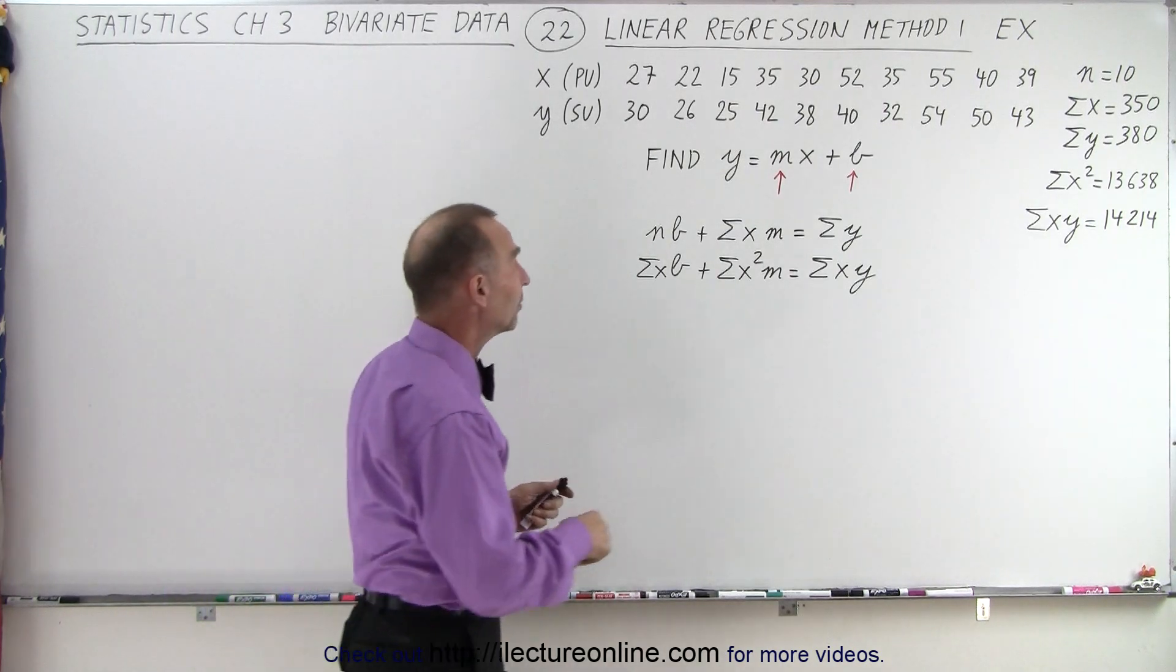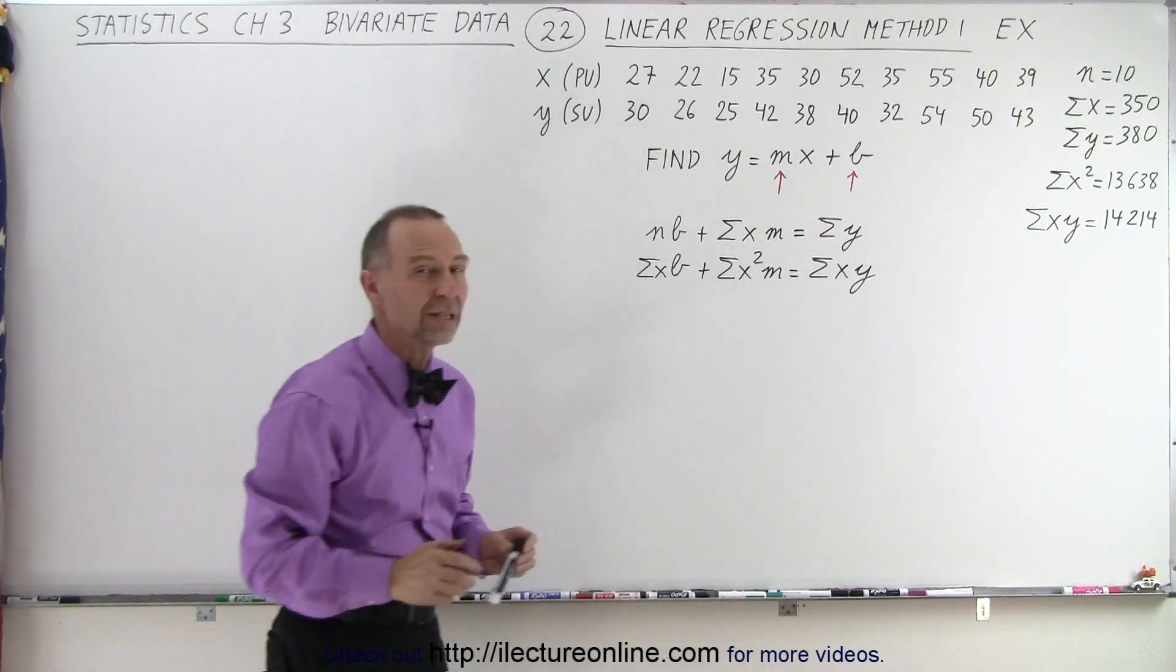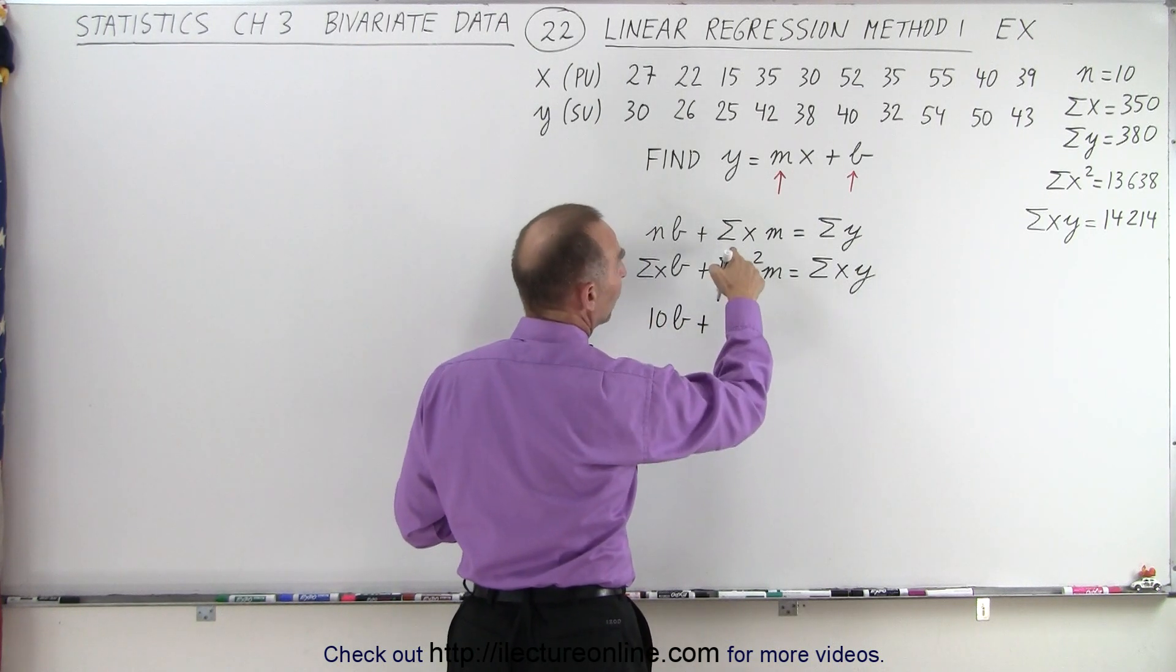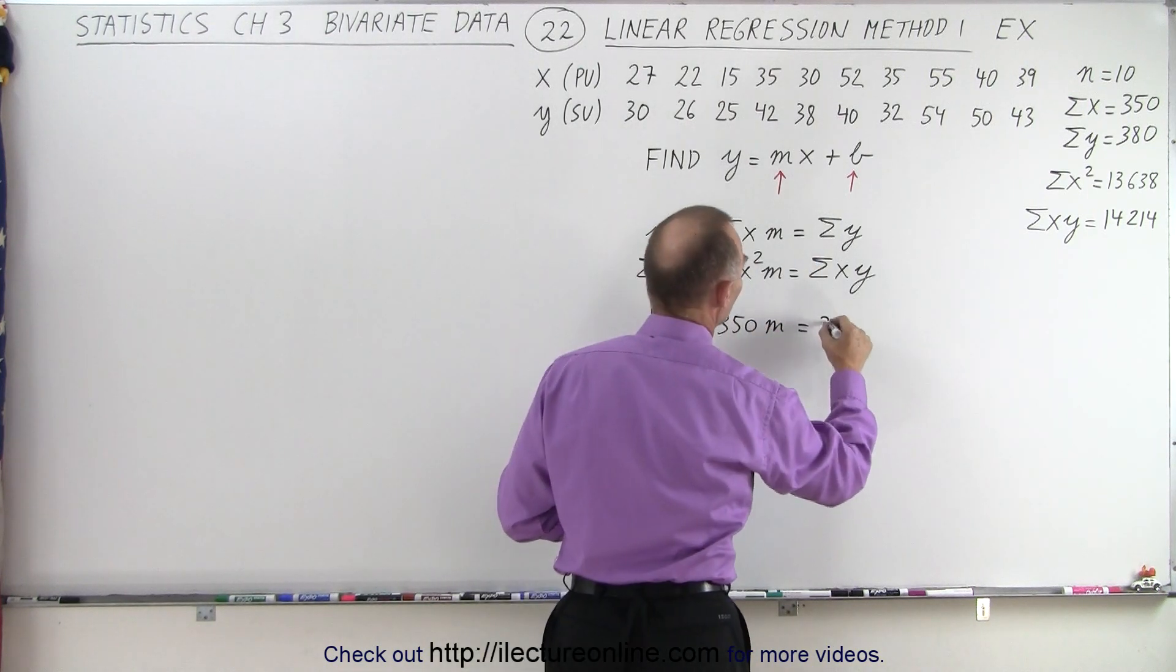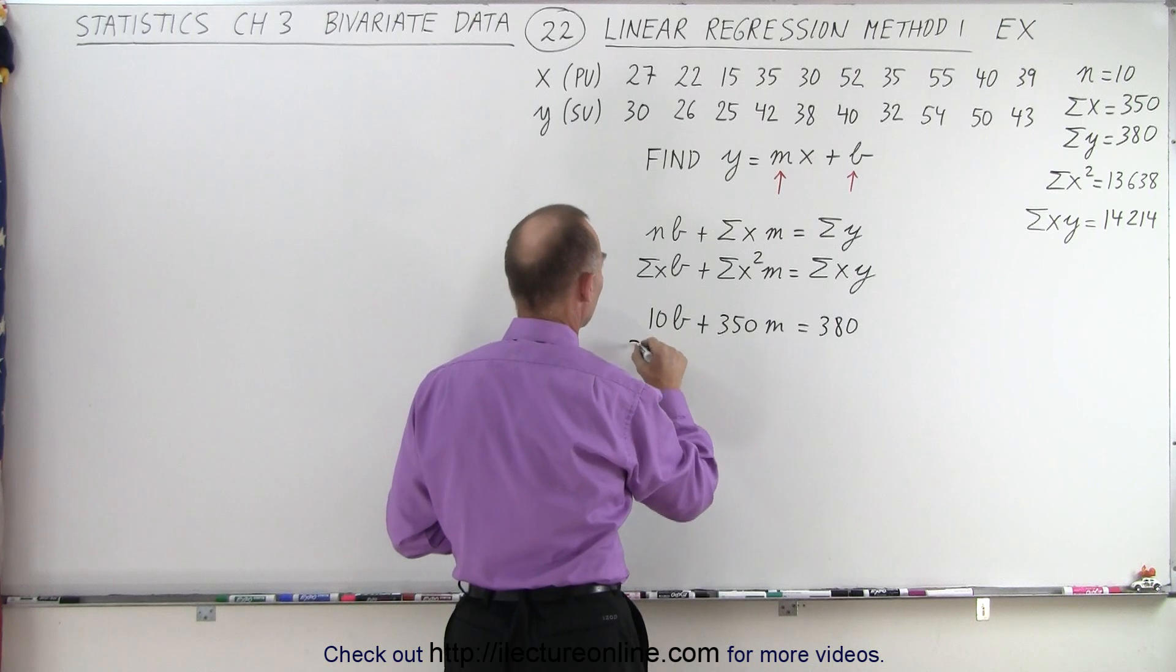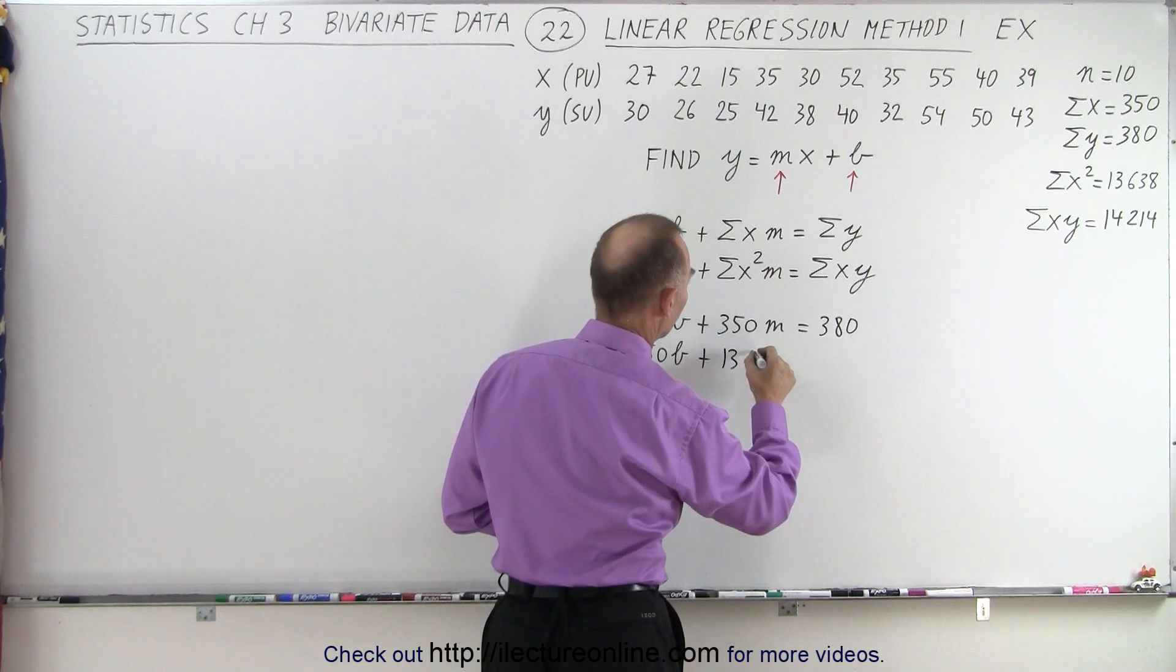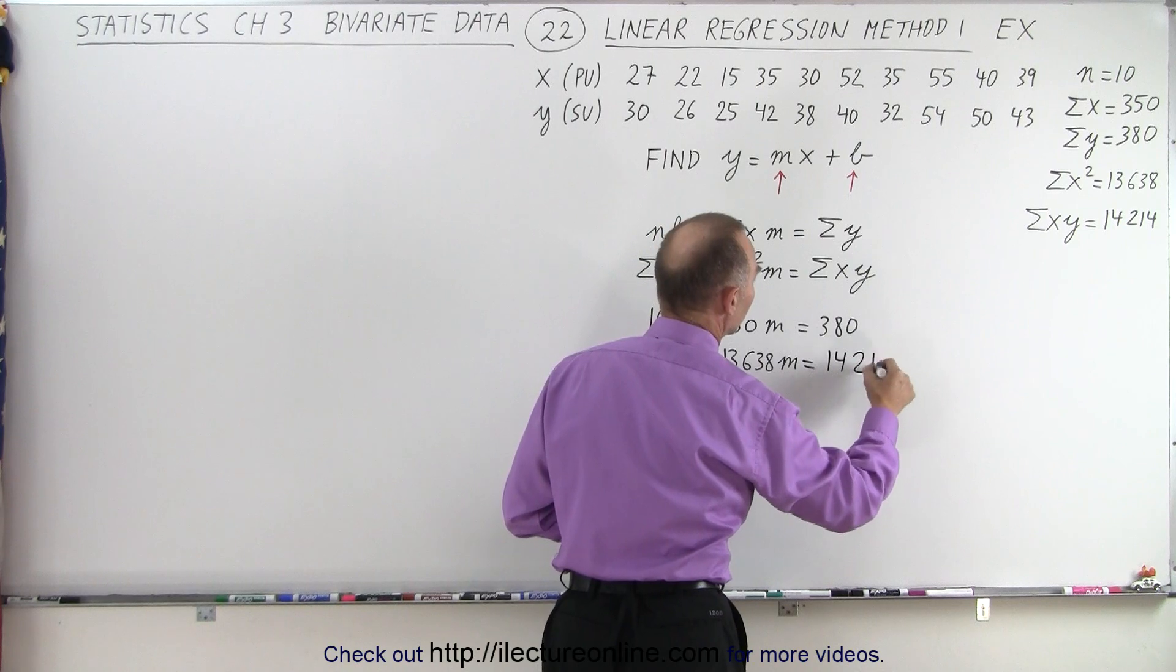Now the next step to find the equation, we need to find the slope and the intercept, and we can do so by solving these two equations simultaneously. So now let's plug in the values that belong there. Since n is equal to 10, we get 10 times b plus the sum of all the x's, which is 350, times m, is equal to the sum of all the y's, which is 380. For the second equation, the sum of all the x's times b, which is 350b, plus the sum of all the x squares times m, which is 13,638m, is equal to the sum of all the x times y's, which is 14,214.